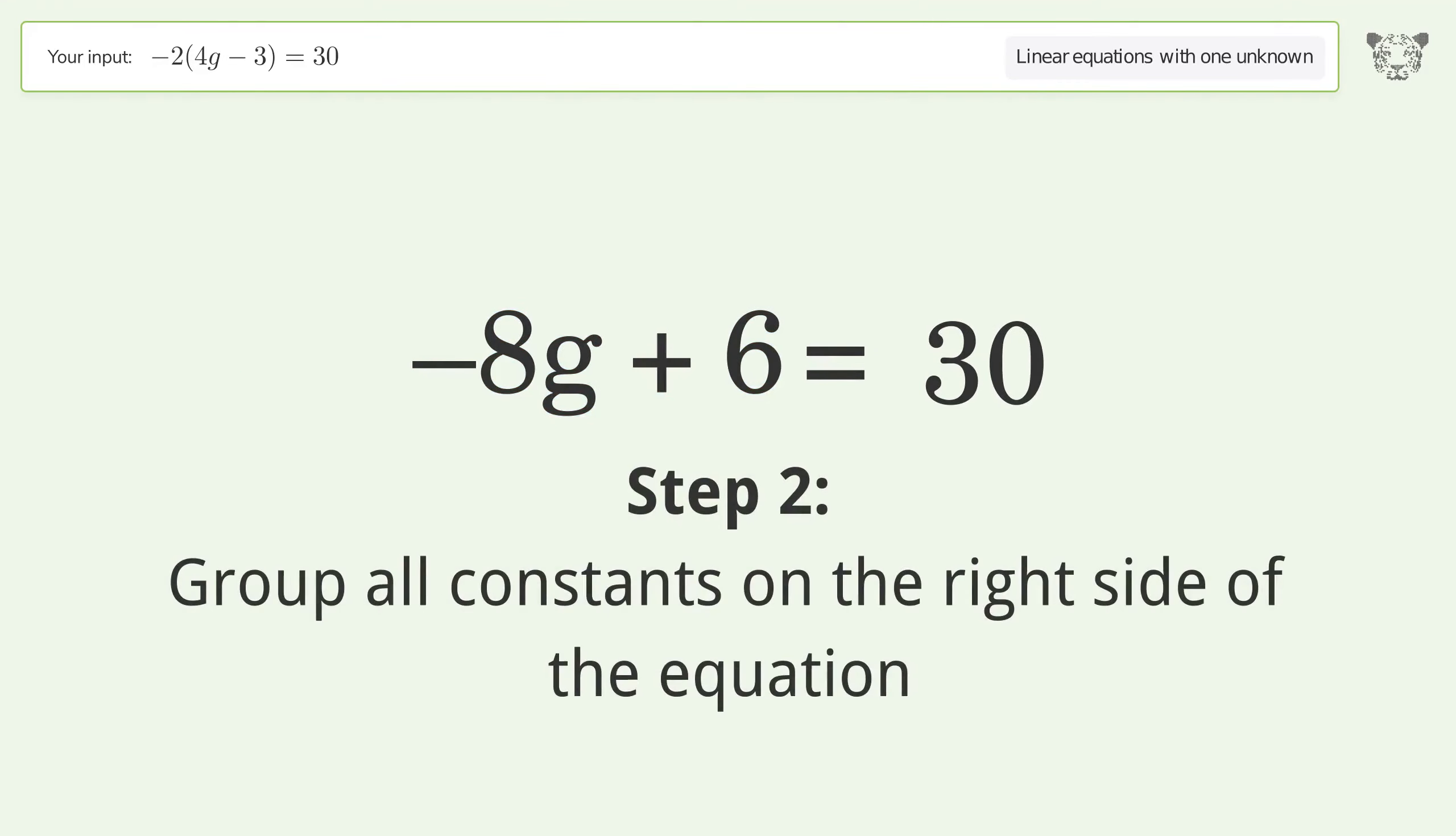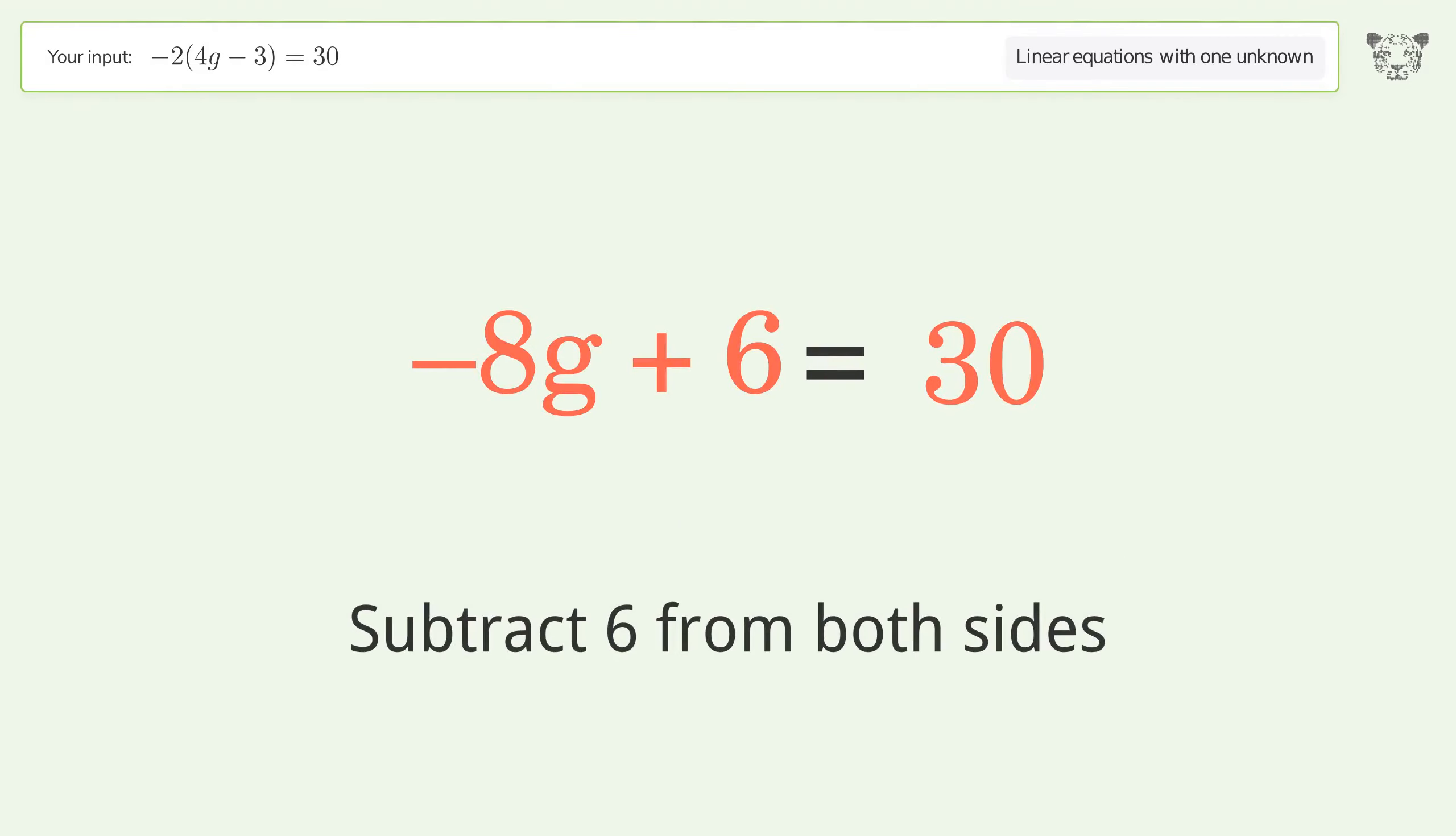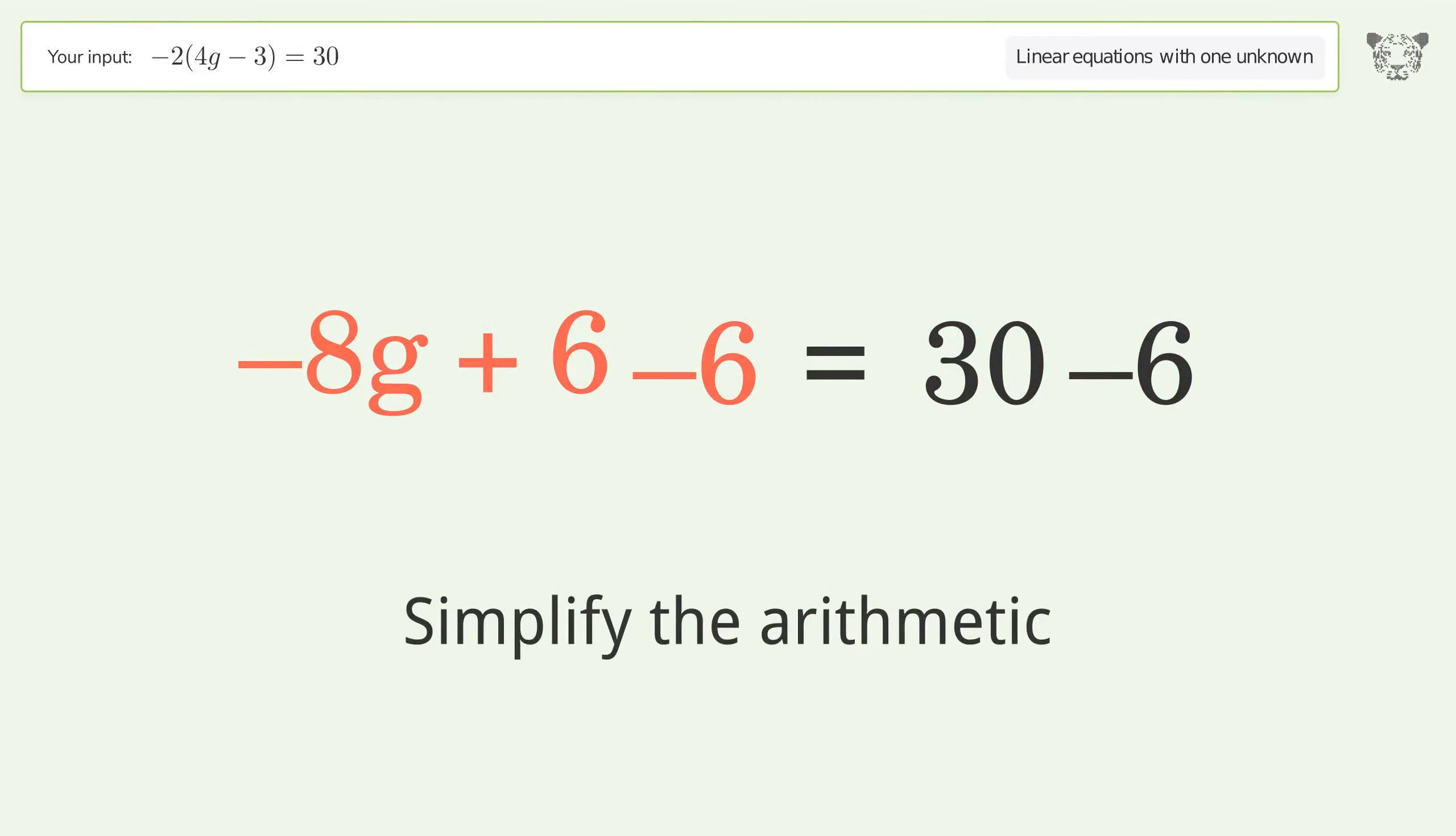Group all constants on the right side of the equation. Subtract 6 from both sides. Simplify the arithmetic.